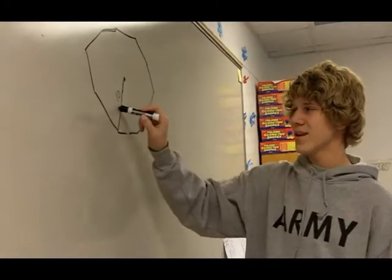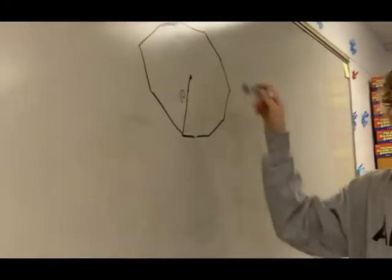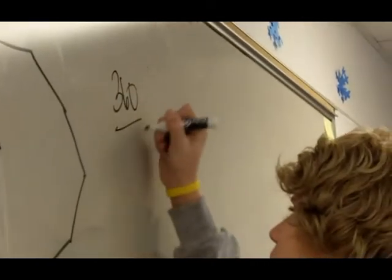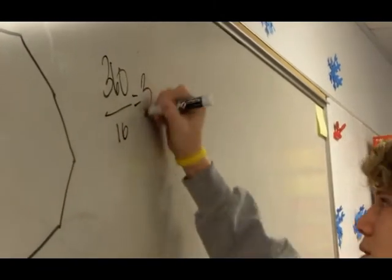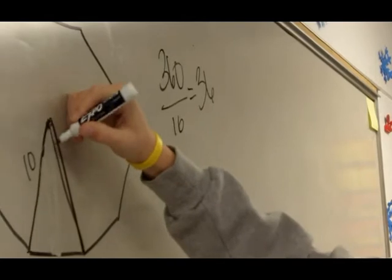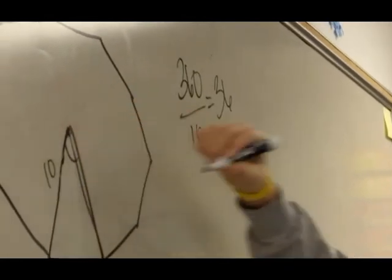I started with a radius of 10 and then because I know it's gonna be 10 sides, I divide 360 by 10, and 360 by 10 gives you 36, so this right here is 36.